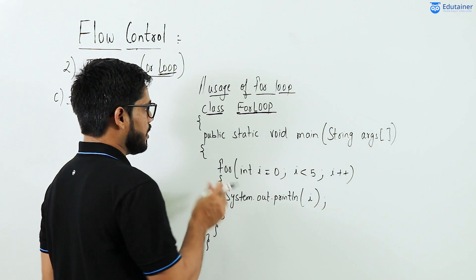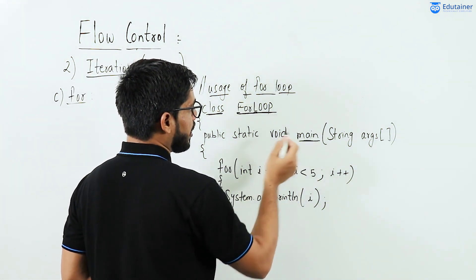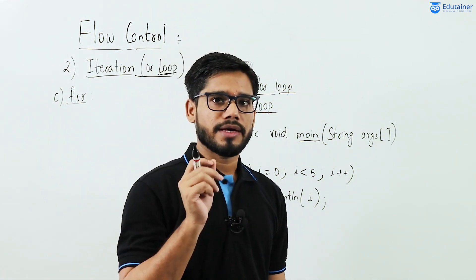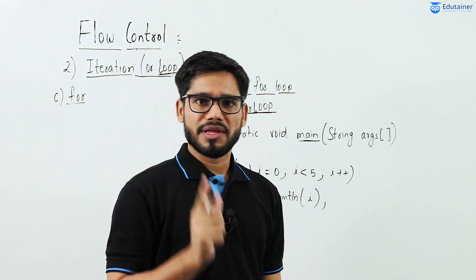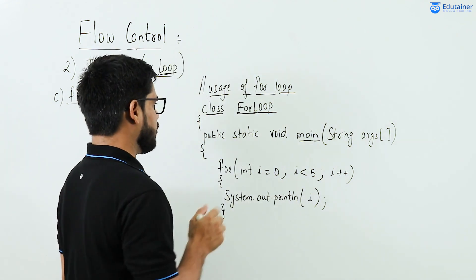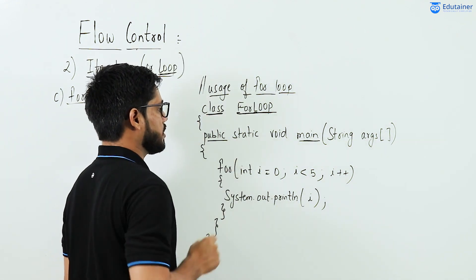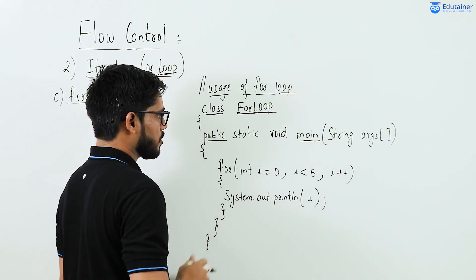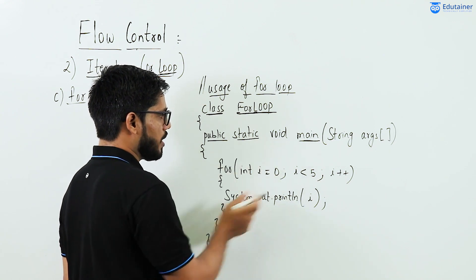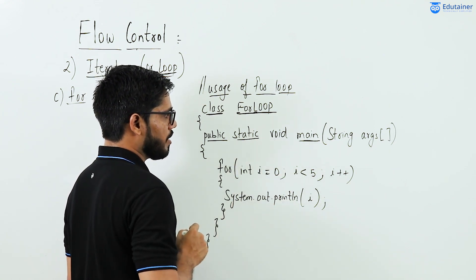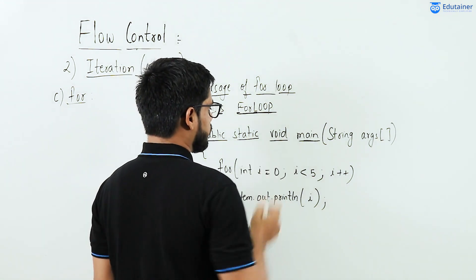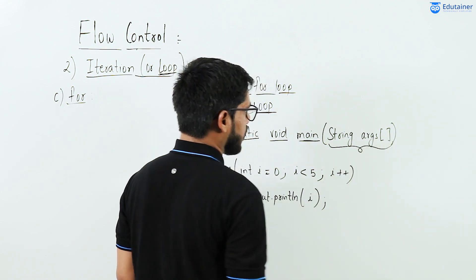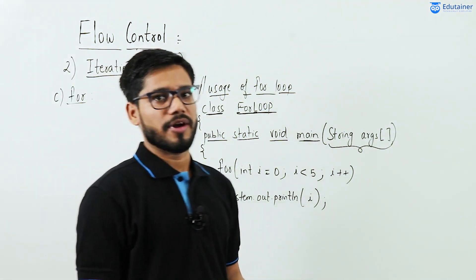Inside the class, we declared the main method — because every Java program must have one main method. The main method has public access specifier because I want its visibility throughout the class, static because no object is created inside the main method, void because it does not return anything, and String args for command line arguments to provide input at the command line.